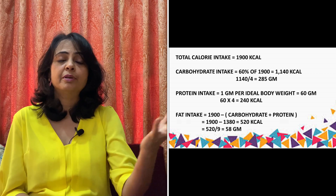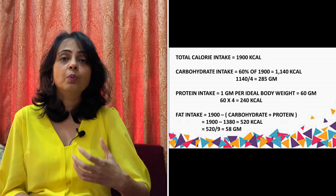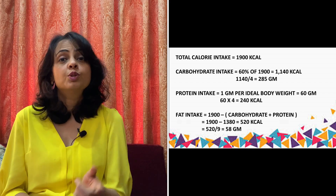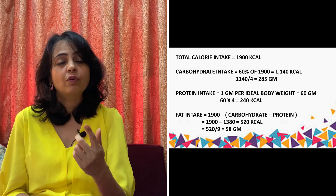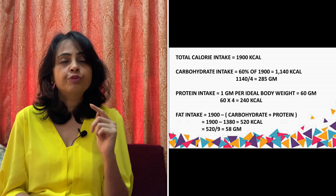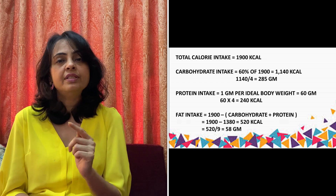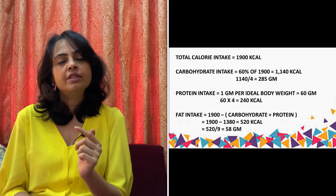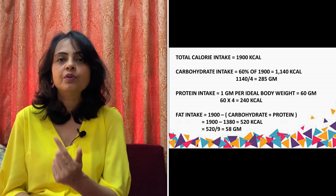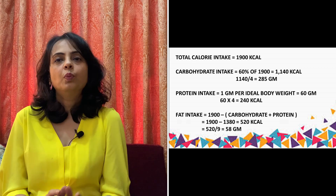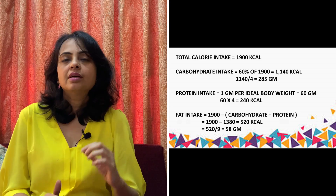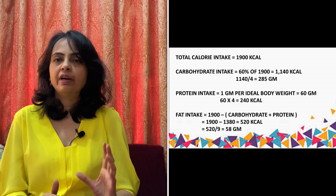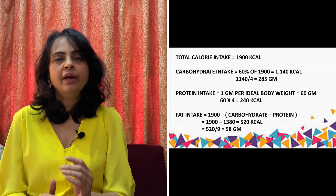Knowing the calorie amount is not enough — I need to convert it into grams to know the actual quantity. Using the unitary method: since 4 kilocalories come from 1 gram of carbohydrate, 1140 kilocalories will come to 285 grams. So I need 1140 kilocalories and 285 grams of carbohydrate in my diet.